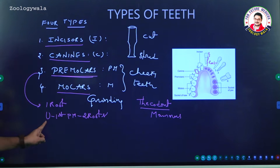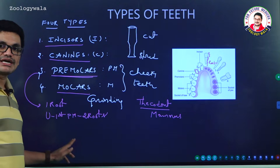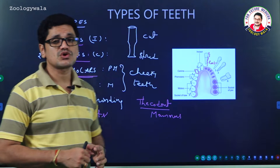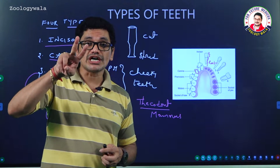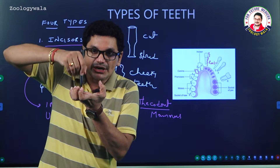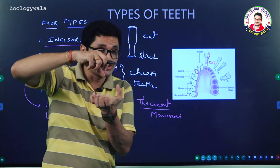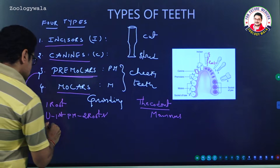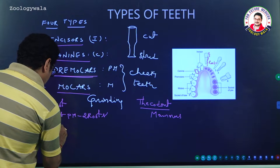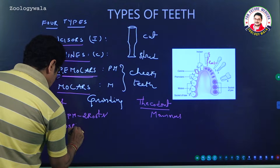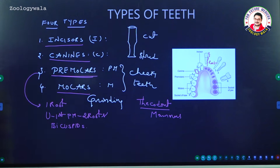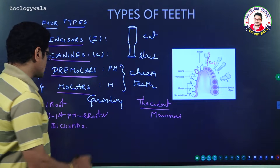The upper first premolar contains two roots. Premolars are also called bicuspids because two cusps are present. A cusp is nothing but a depression present over the tooth. So premolars are also called bicuspids, and the upper first premolar has two roots.